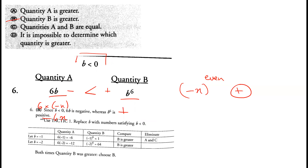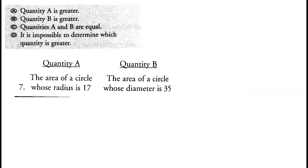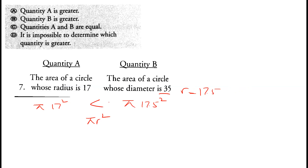Question 7: the area of a circle with radius 17 is π × 17², and the area of a circle with diameter 35 has radius 17.5, so its area is π × 17.5². Since 17.5² is greater than 17², quantity B is greater than quantity A. Hence option B is correct.